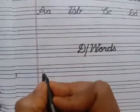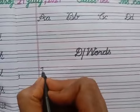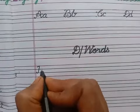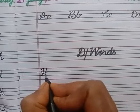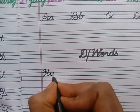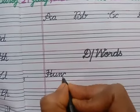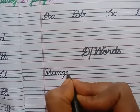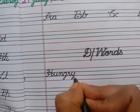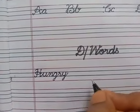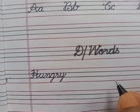H. Start from the corner. H, U, N, G, R, Y. Hungry. Say the spelling of hungry: H, U, N, G, R, Y. Hungry.